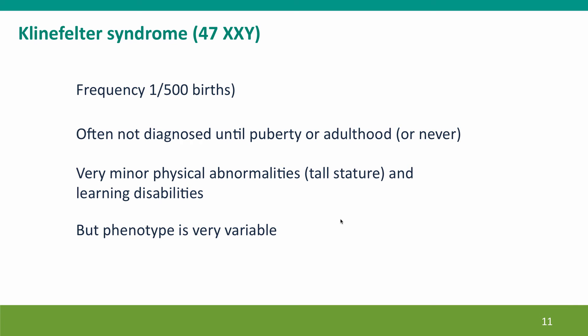What about Klinefelter's syndrome? The karyotype is written as 47 XXY — they've got 47 chromosomes because they have one more X chromosome than a normal man. This is more common than Turner's syndrome, with a frequency of about 1 in 500 births. Men with Klinefelter's syndrome are usually very nearly normal — usually tall, with some minor learning disabilities. Klinefelter's syndrome often isn't diagnosed until puberty or adulthood or never, and is thought to be quite seriously underdiagnosed. Many men only learn when they're unable to have children, because men with Klinefelter's syndrome are typically sterile.